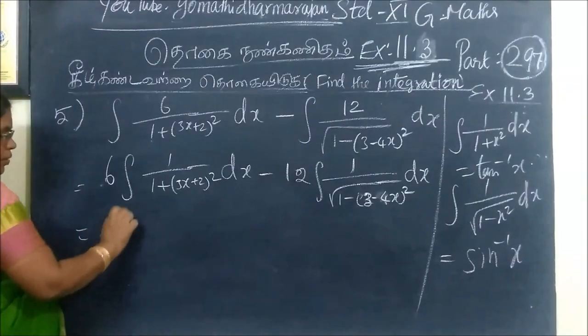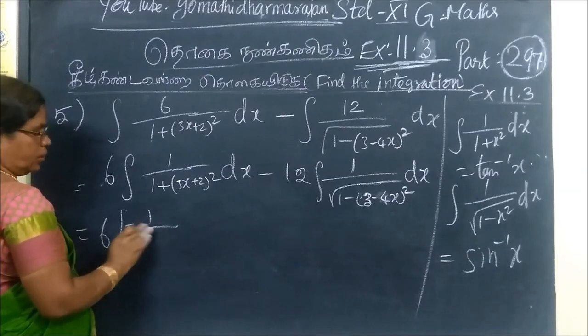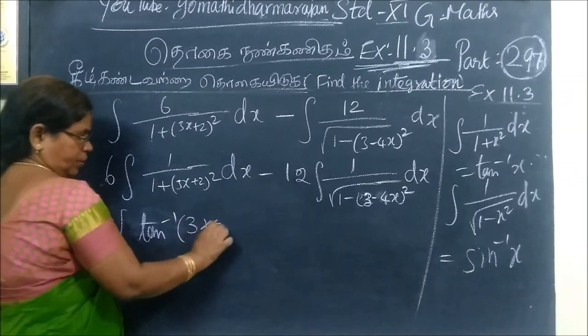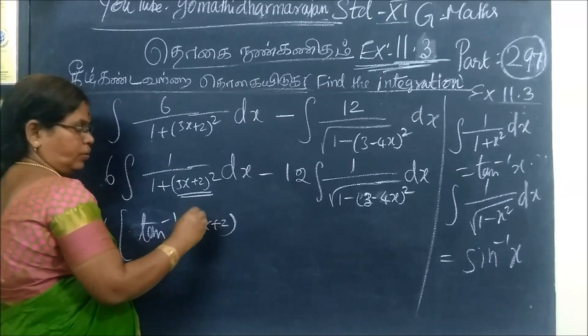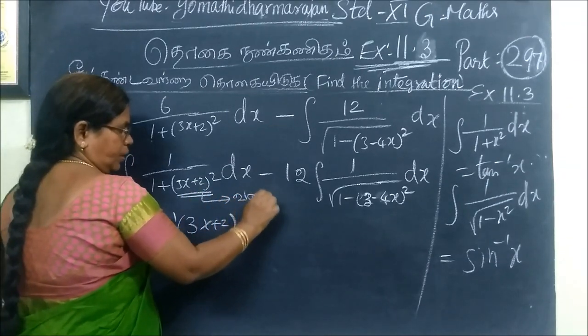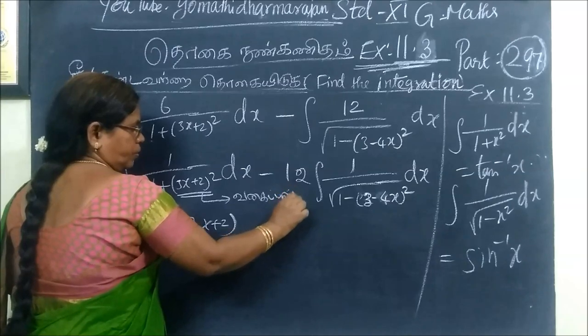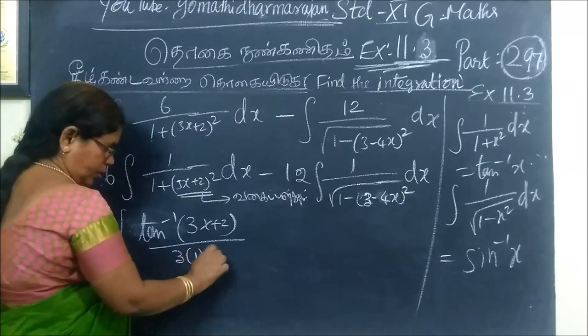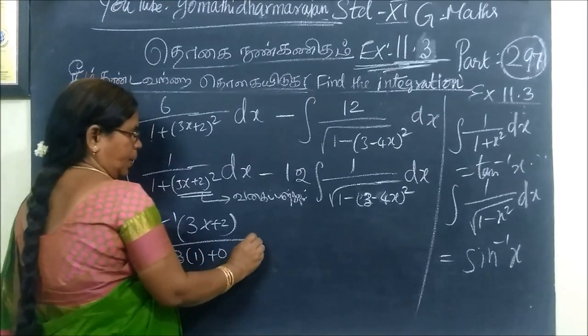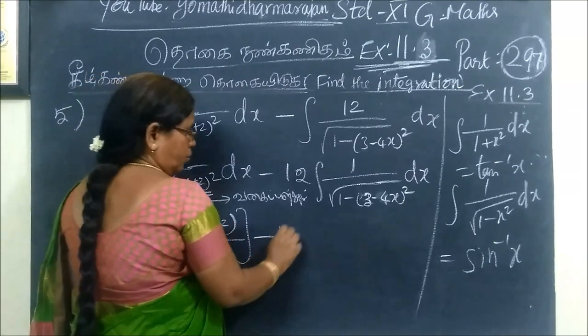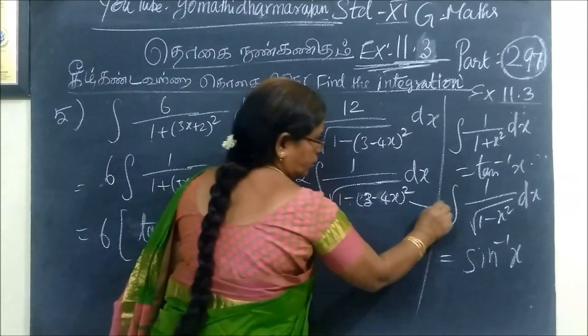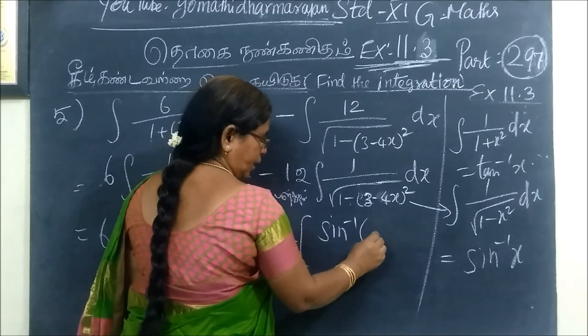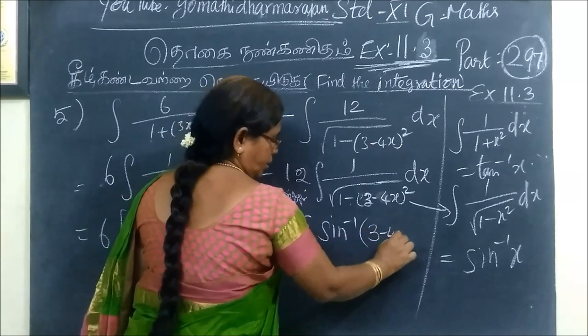So this is equal to 6, 1 by, sorry, 2 by tan inverse 3x plus 2. By 3 bracket, 1 is equal to tan inverse. Then minus 12. This is equal to tan inverse x.